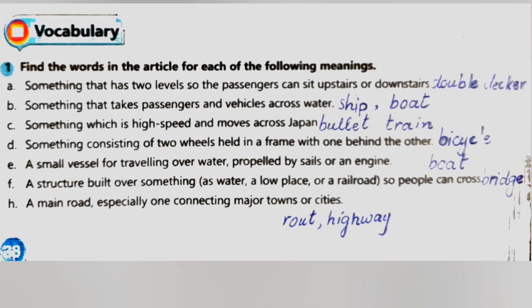D: something consisting of two wheels held in a frame with one behind the other. The answer is bicycle. E: a small vessel for traveling over water, propelled by sails or an engine. That is called boat.